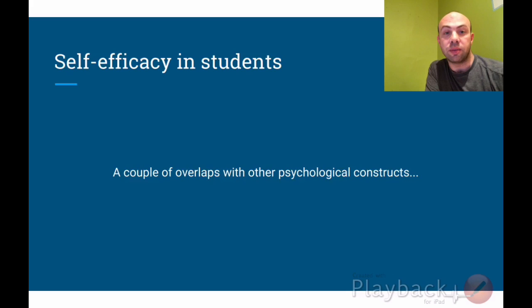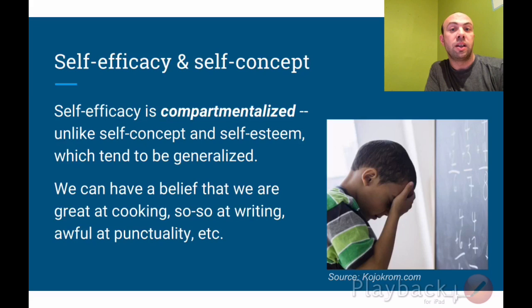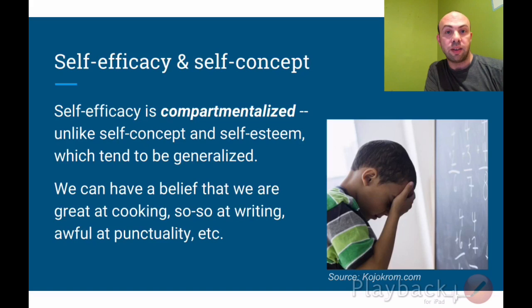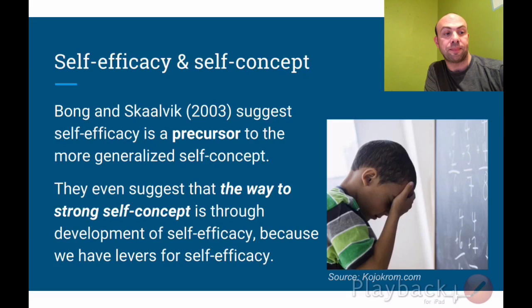Let's talk about overlaps between self-efficacy and other constructs. Self-efficacy overlaps with self-concept. Self-concept is generalized — it's one's feeling of self-worth as an individual — whereas self-efficacy is compartmentalized. Each of us can believe we're good at one particular subject and bad at another. Self-esteem and self-concept we generally think of as a single belief across our entire being. Bong and Skalvik (2003) suggest that self-efficacy can serve as a precursor to the more generalized self-concept, so developing self-efficacy in a student with a weak self-concept could be a good way to bolster it, because we have levers for improving self-efficacy.